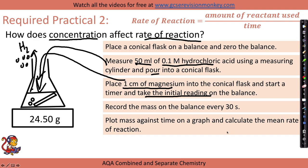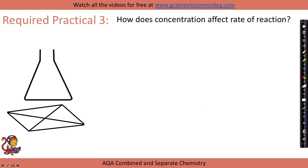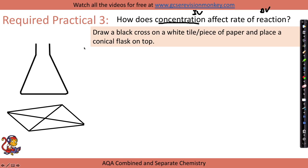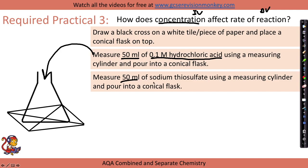Plot mass against time on a graph to calculate the mean rate of reaction. Repeat for concentrations of 0.5, 0.7, and 1 mol/dm³ acid, repeating three times for each and calculating a mean. A third practical — again changing concentration and measuring rate — involves drawing a black cross on a white tile, placing a conical flask on top, measuring 50 ml of 0.1 mol/dm³ hydrochloric acid, and also measuring 50 ml of sodium thiosulfate, pouring both into the flask.